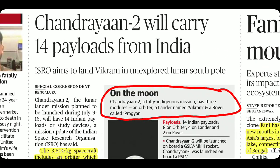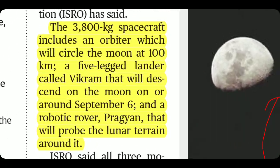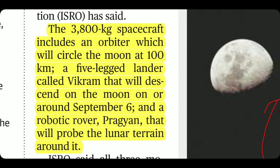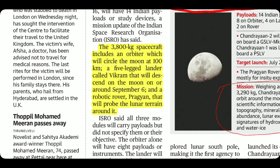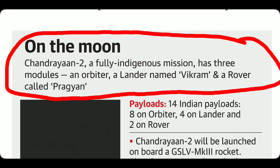Chandrayaan 2 will carry 14 payloads from India. It is a 3,800 kg spacecraft with three modules: an orbiter that will circle the moon at 100 km altitude; a five-legged lander called Vikram, which will descend around September 6; and a robotic rover called Pragyan. Chandrayaan 2 is a fully indigenous mission — UPSC may ask if it's a joint collaboration with USA/Nepal/EU, which is incorrect.